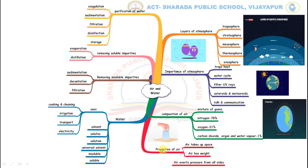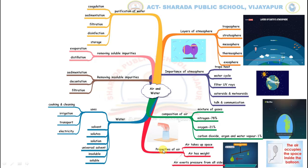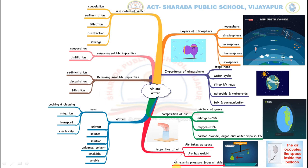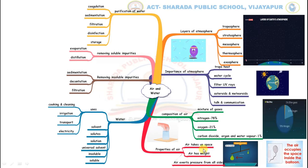The next branch deals with properties of air. There are three properties: air takes up space, air has weight, and air exerts pressure from all sides. We can prove these properties by doing simple experiments.